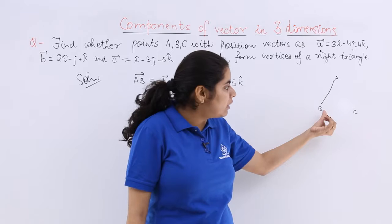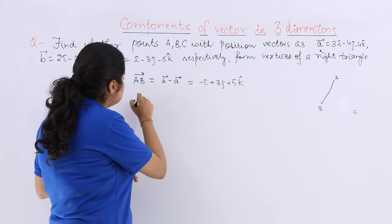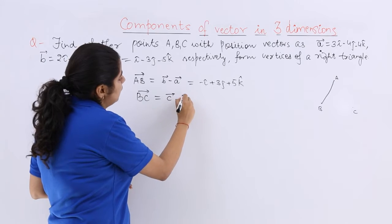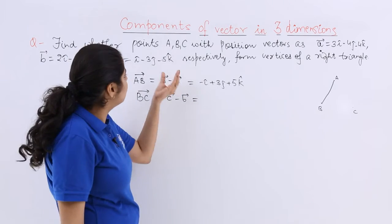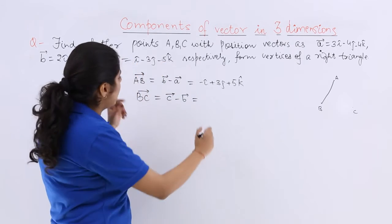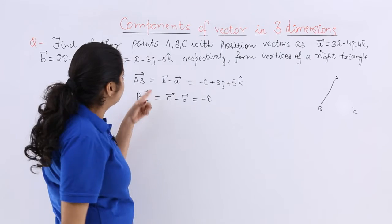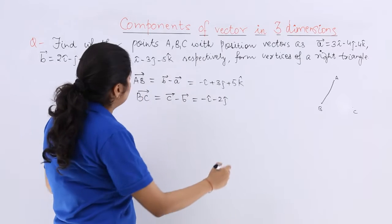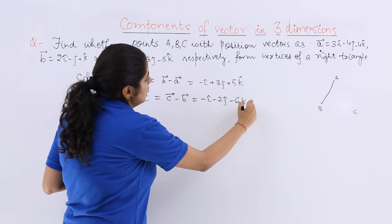Next, if you have found out about AB, why to leave BC? So BC vector is equal to C vector minus B vector. Now what is C vector? C vector is here. So i minus 2i is minus i, minus 3j plus j is minus 2j, minus 5k minus k is minus 6k.